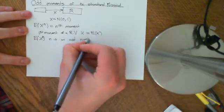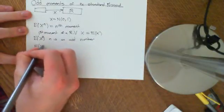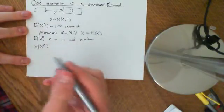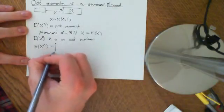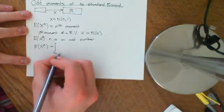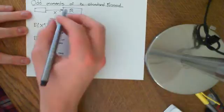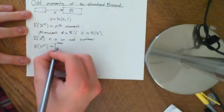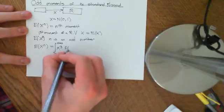And then basically we can just apply the law of the unconscious statistician for continuous random variables. Which says that this is the integral between negative infinity and infinity, i.e. all values that the random variable can take on, of x cubed times little f of x.